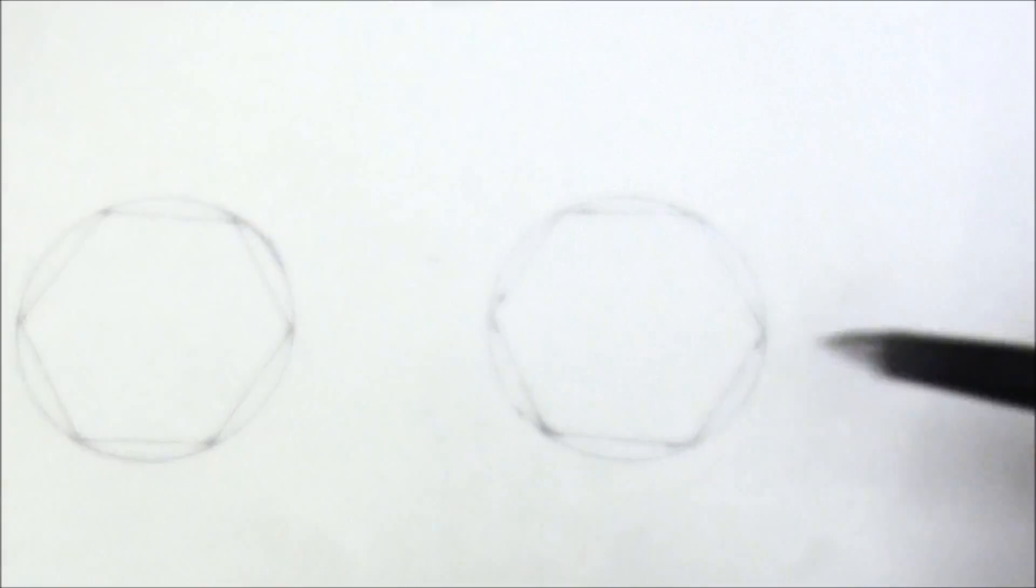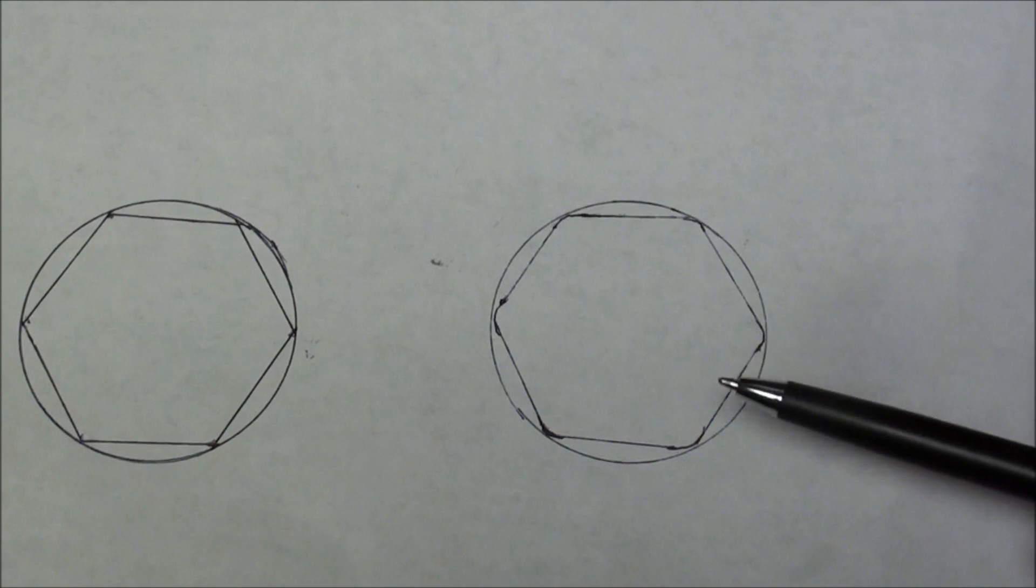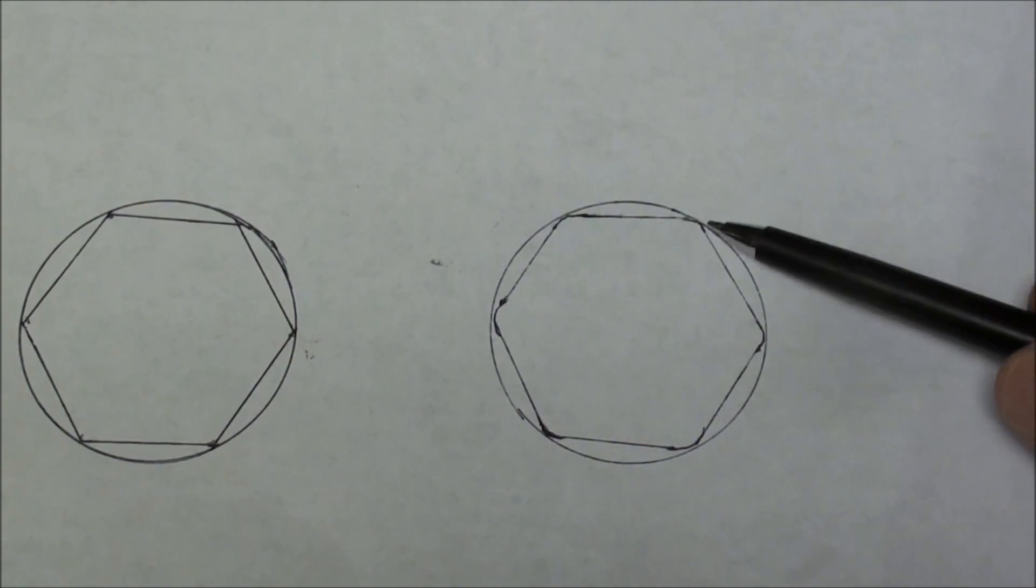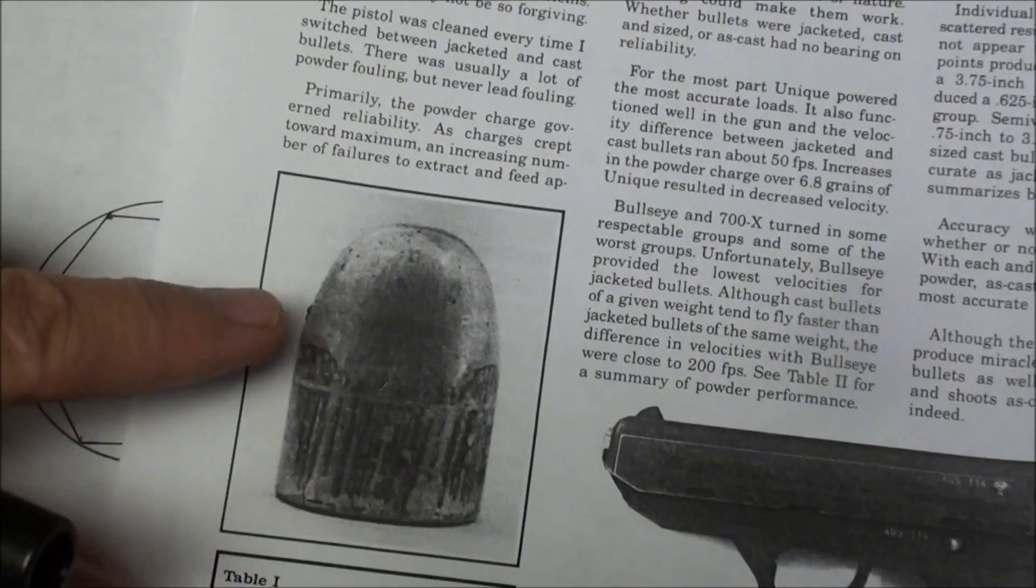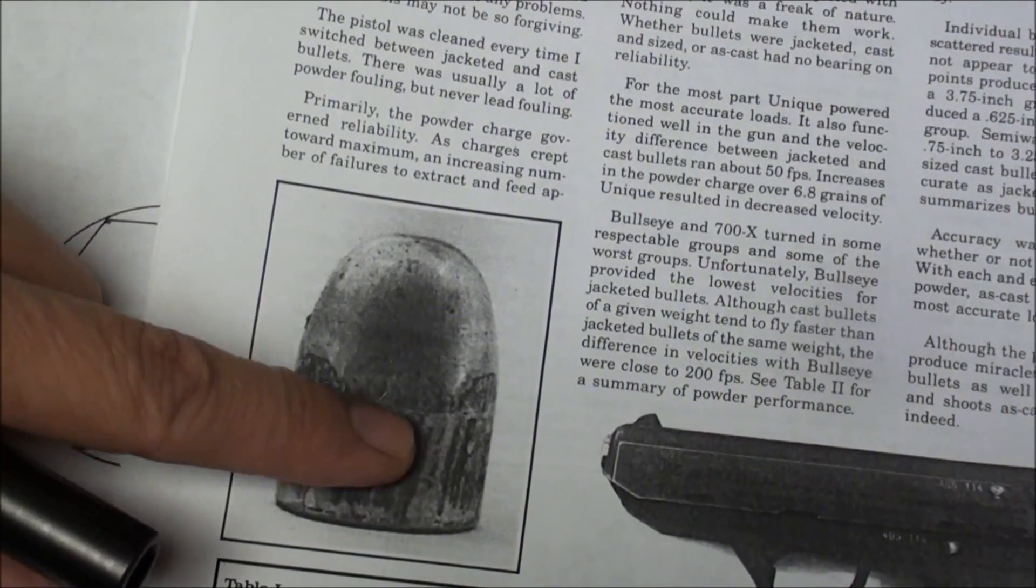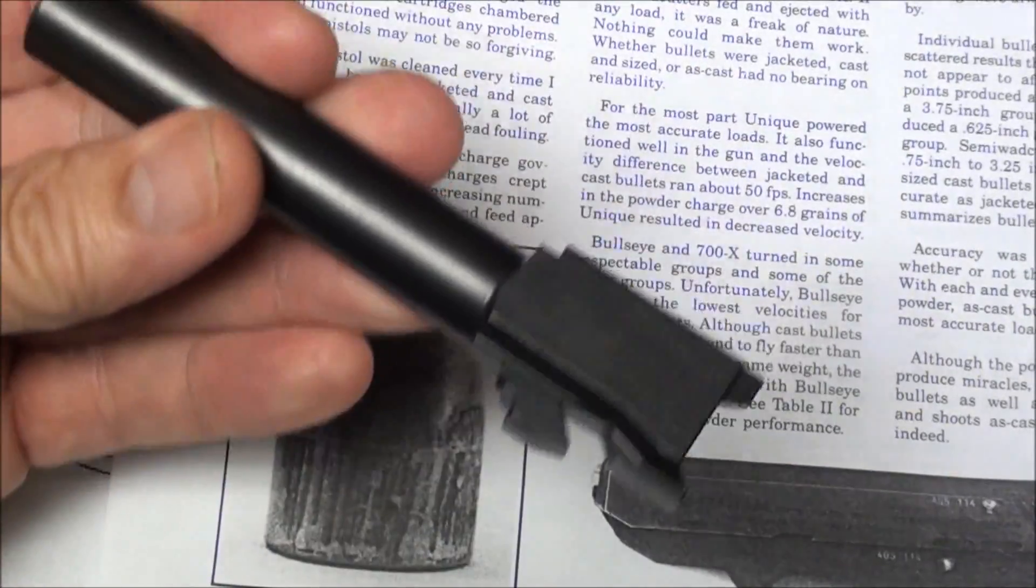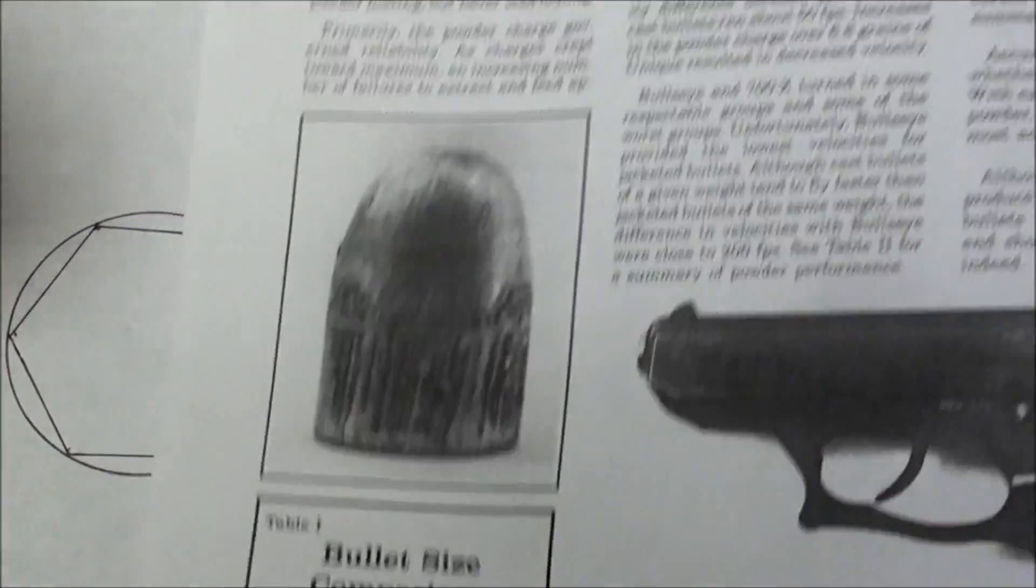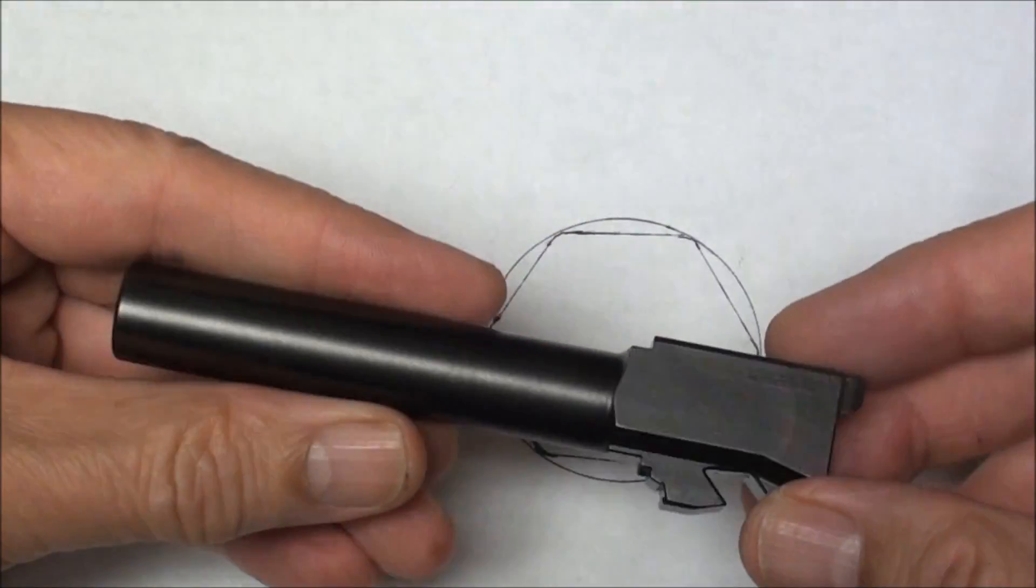But we've already talked about the fact that polygonal rifling doesn't have hills and valleys. Polygonal rifling has flats and valleys, and a polygonal fired bullet can only have flats and hills. You won't get that with a Glock barrel. What you'll get is valleys and hills, and there will be valleys and hills in a bullet too. So is this true polygonal rifling?